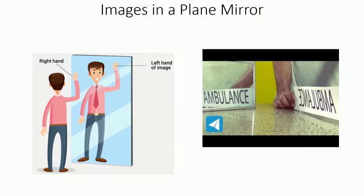Images in a plane mirror: An image is a visual representation of the external form of a person or thing. Let us study this by doing three activities.